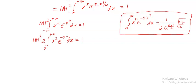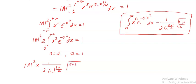Now compare the integral to the standard integral. We have x to the power 2, so n is equal to 2 and A is 1. So we can write mod A square into 1 divided by 2 times A to the power n plus 1 divided by 2 — since A is 1, that gives 1 — times gamma of n plus 1 divided by 2, which is gamma of 2 plus 1 divided by 2, equal to 1.